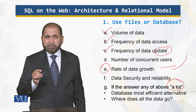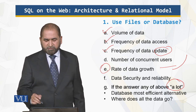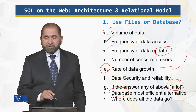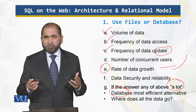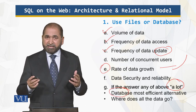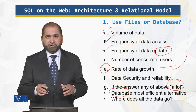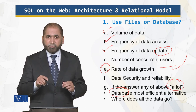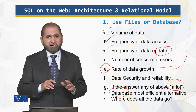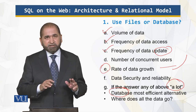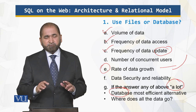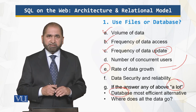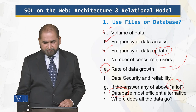If the answer to any of the above suggests scale, then you need a DBMS — a database is more efficient. The data will still be stored in a file, but that file is not managed by PHP. It is entirely different, transparent, and hidden from PHP — processed entirely by the database management system.